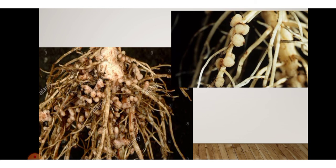Rhizobium often lives in the roots of gram, peas, mung beans, and other leguminous plants, providing them with nitrogen. In return, the plants provide food and shelter to the bacteria. This is a symbiotic relationship. This association is significant for farmers — it reduces the need for nitrogenous fertilizers where leguminous plants are grown. Most pulses are obtained from leguminous plants.